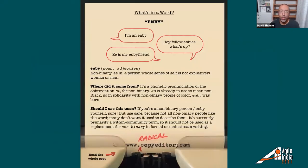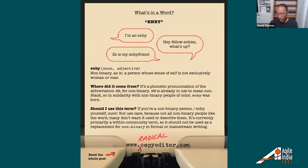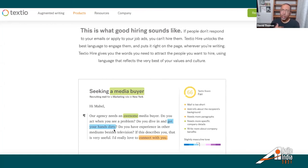There are tools to help us think about how to write more inclusively. Radical Copy Editor is excellent for understanding how to write about folks who usually don't get a lot of say in how they're written about. Another one is Textio, which is really good for writing more inclusive job descriptions — because not everybody wants to be a rock star or a ninja.